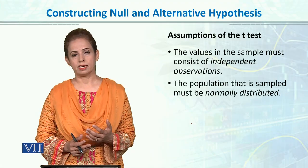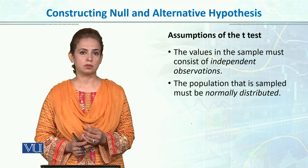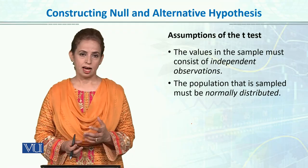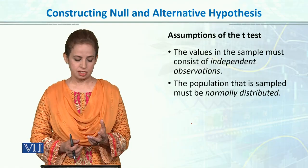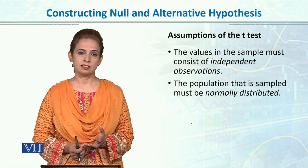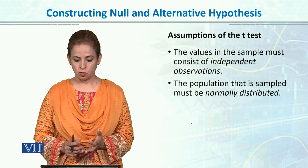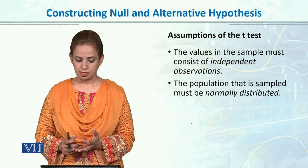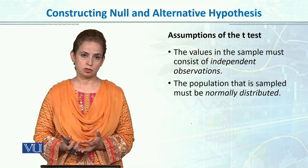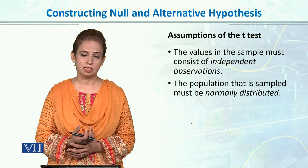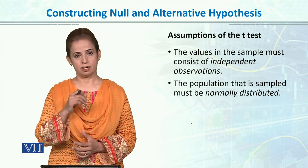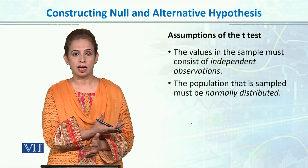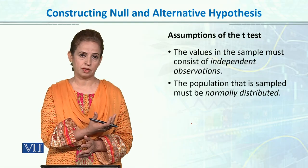Kuch assumptions jis ta hum bata ta hai ke whatever test we use in statistics, there are certain assumptions for using that test. T-Test ke liye bhi, abhi hum pahele karayenge one-sample T-Test, or one-sample T-Test ke assumptions yeh hain, ke the value in the sample must consist of independent observation, and the population that is sampled must be normally distributed. So, chunke yeh parametric test hain, aur parametric test ke anndar, hameisha parametric mein, we make some assumptions about the underlying population.